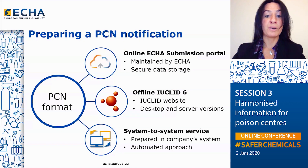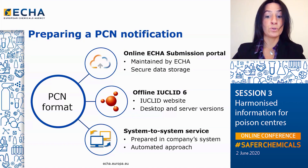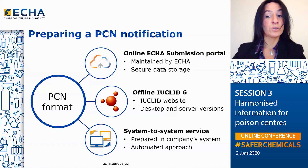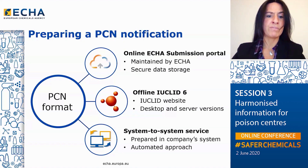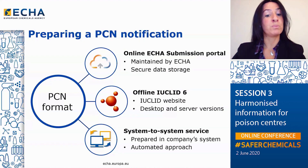Offline, you can prepare a Poison Centers notification by using Euclid 6, a software that you can download from the Euclid website. Once you have installed Euclid 6 on your computer, it has to be maintained locally. In case of new releases, you need to make sure that you replace the old version with the new one to be sure that you can prepare valid Poison Centers notifications. Euclid 6 is also available in a server version for companies planning to have multiple users.